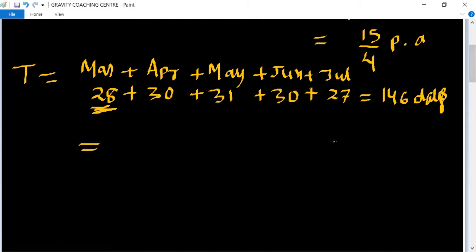Now converted into years: 146 upon 365. Both numbers are divisible by 73, so 2 upon 5 years.